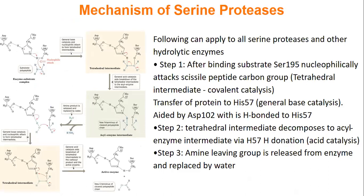We're going to skip the actual mechanism of the catalytic triad for this class. What you should know is: the catalytic triad is aspartic acid, histidine, and serine. Make sure you know what amino acids make up the catalytic triad, what the specificity pocket is and how we bind things — but we're going to skip the detailed mechanism.